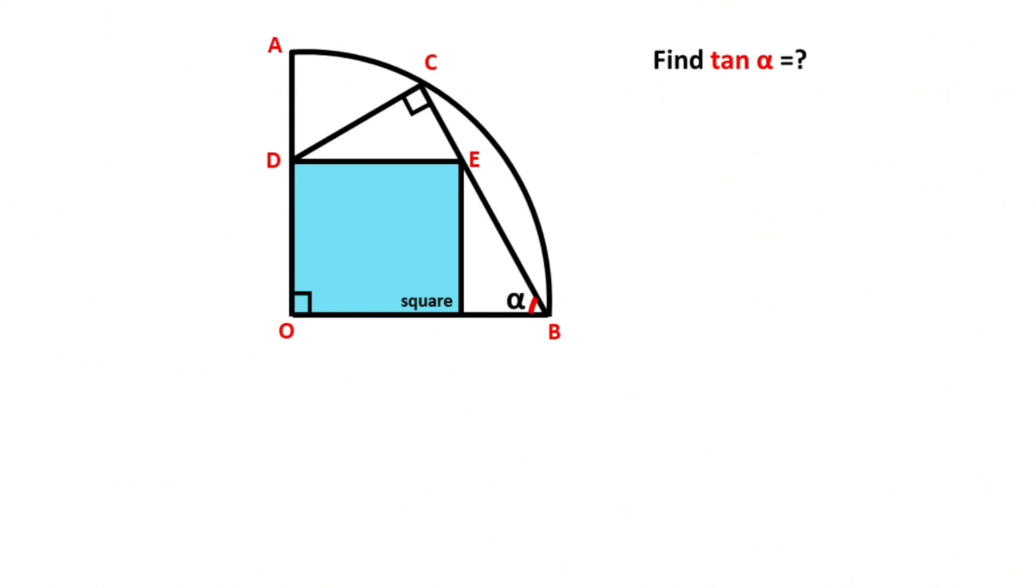We know that a square has four equal sides, so these are equal. Let's call this angle theta. If you notice that alpha plus theta equals 90 degrees, then here must be equal to alpha, and theta is left here.